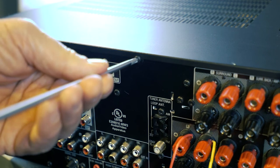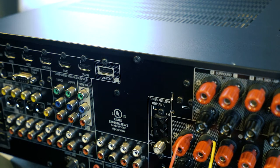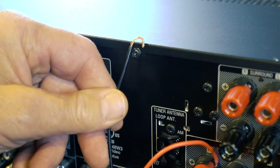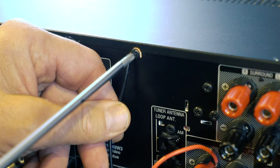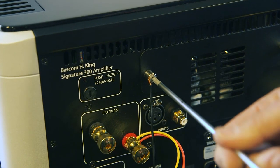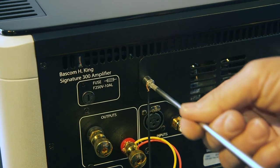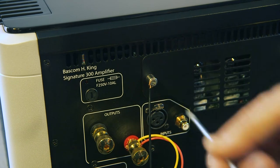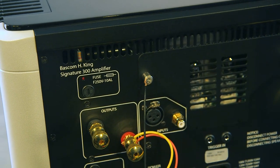If your amplifier does not have a dedicated grounding point, loosen a chassis screw and wrap the black wire around the screw and then retighten it. Sometimes this doesn't work because the finish on the amplifier or the receiver acts as an insulator.